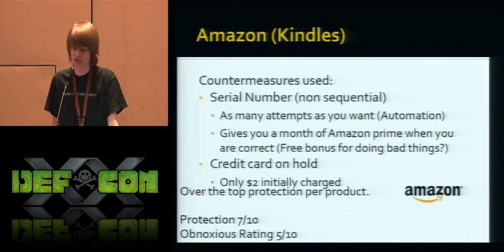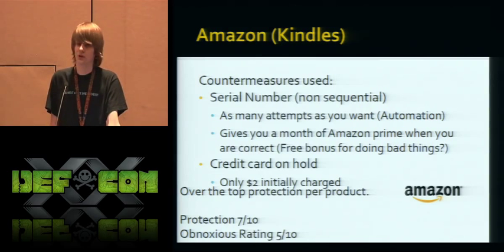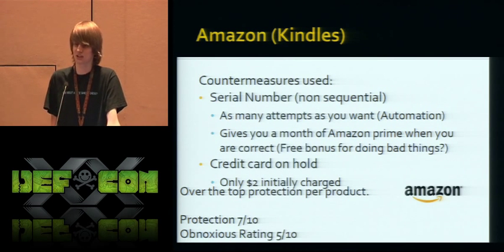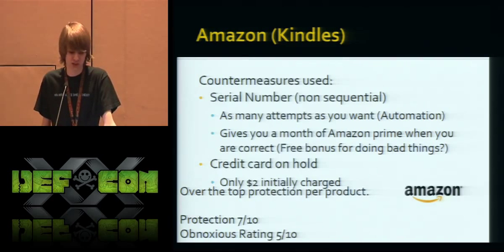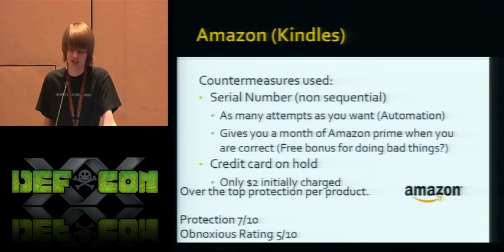Amazon uses a serial number that is non-sequential and follows a preset set of rules, but they give unlimited attempts to register on your Amazon account — so you could automate the system and start registering as many false serials as you want. Every time you hit a valid serial you get a free month of Amazon Prime as a bonus. When it comes time to send the product back, they put a hold on your credit card — a whopping two dollars — so if you have a Visa gift card, you can easily circumvent this. This is really over-the-top protection that doesn't work, and it's kind of obnoxious too.